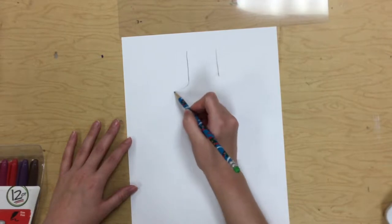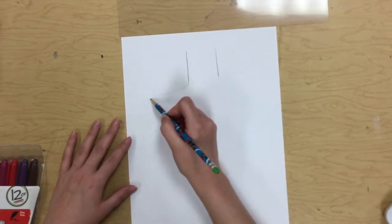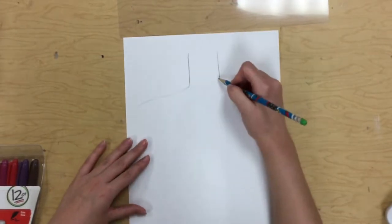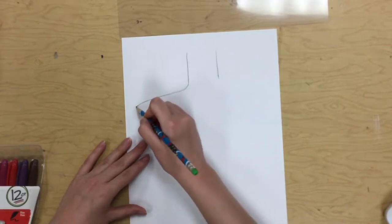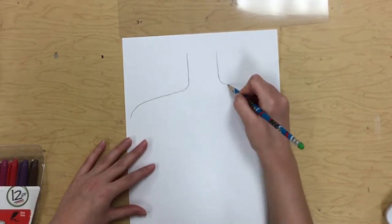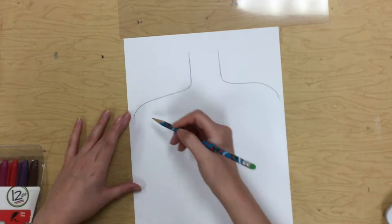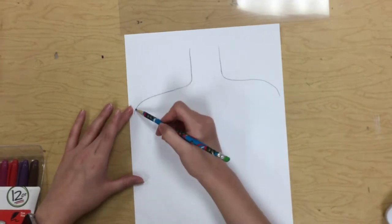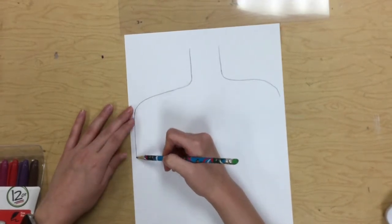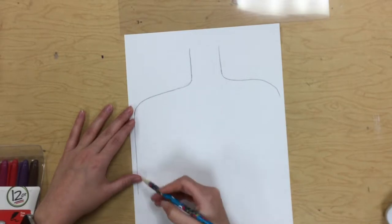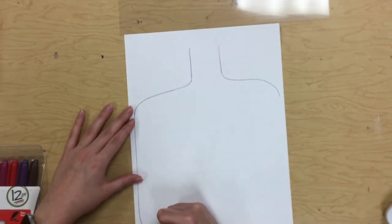Then I kind of come out and come all the way out. These are kind of exaggerated so that way we have a lot of room to draw the details inside. Then I like to just curve it at the bottom.